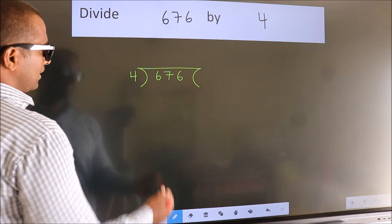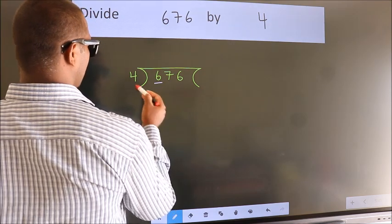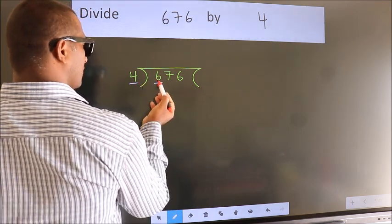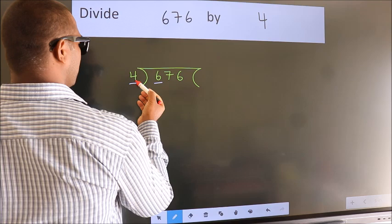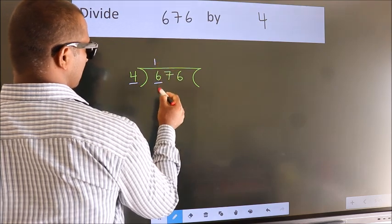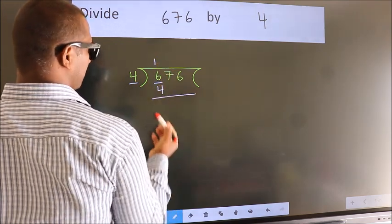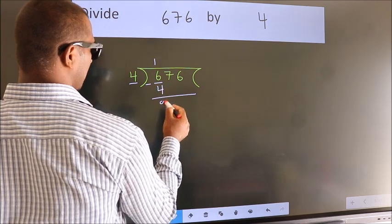Next, here we have 6, here 4. A number close to 6 in 4 table is 4 once 4. Now, we should subtract. We get 2.